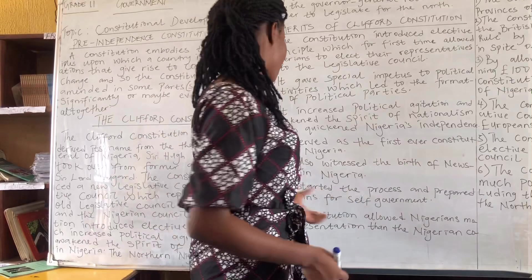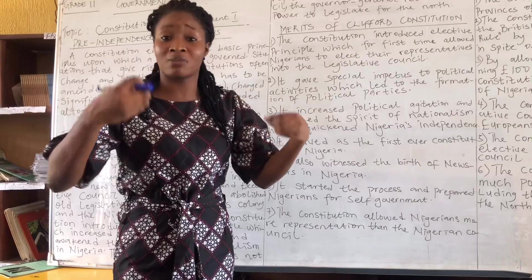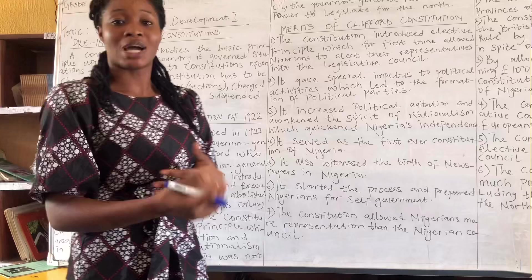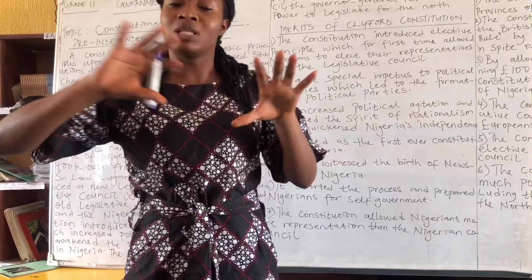Number six: the constitution started the process and prepared Nigerians for self-government. The people were thinking for themselves — deciding to open newspapers and form political parties. They were getting ready, preparing themselves for the day they would be independent and rule themselves. By the time independence came in 1960, they were already largely prepared and knew what governance and government was all about.